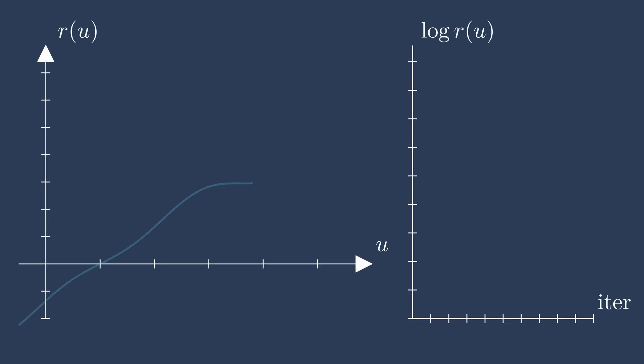Let's start with a one-dimensional example. Remember, the goal is to find the value of U that makes the residual zero. Here, that's the point where the graph crosses the x-axis. The plot on the right will track the residual value at each solver iteration to show convergence.